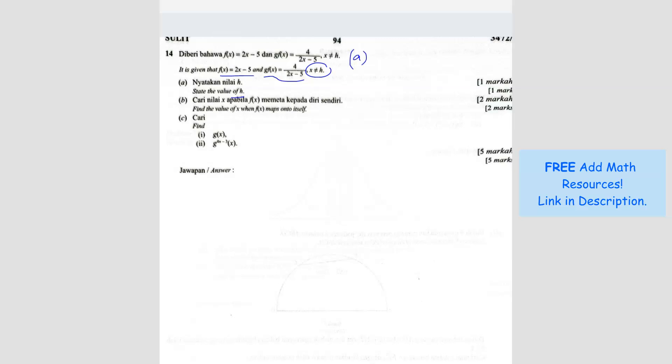So in other words, the question A, the 2x minus 5 from the fraction down here, 2x minus 5, cannot be equals to 0. Because if it's equals to 0, you'll get math error, because it's infinite, so you cannot get 0. So from here, we know 2x not equals to 5 and x not equals to 5 over 2. So since x is not equals to h, so we can say that h is equals to 5 over 2. Done.